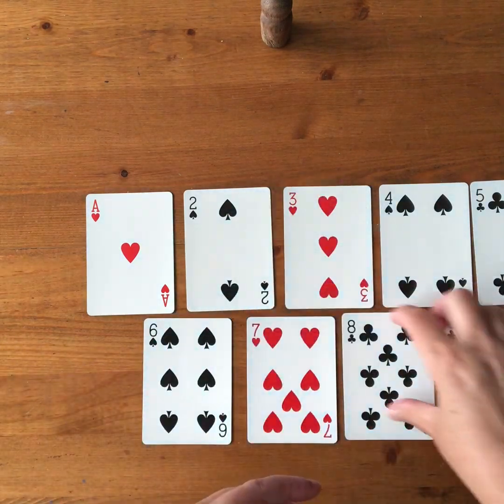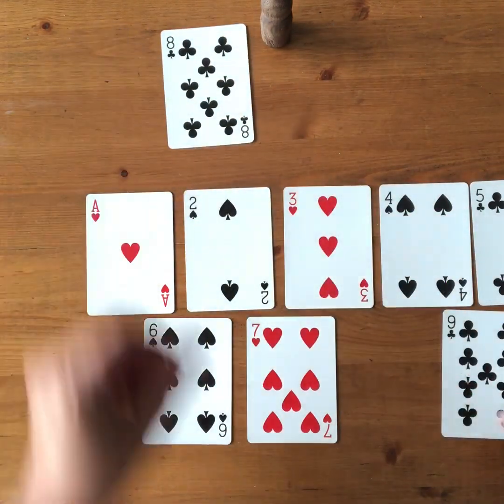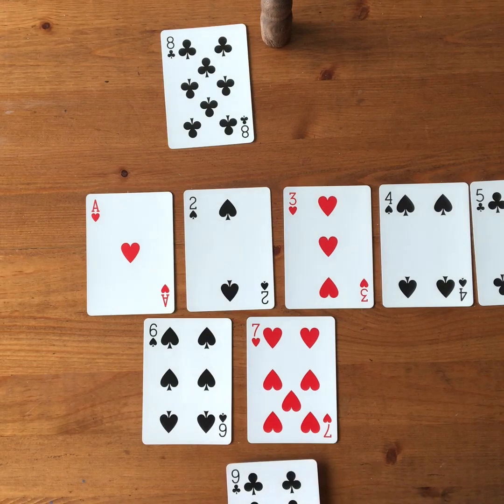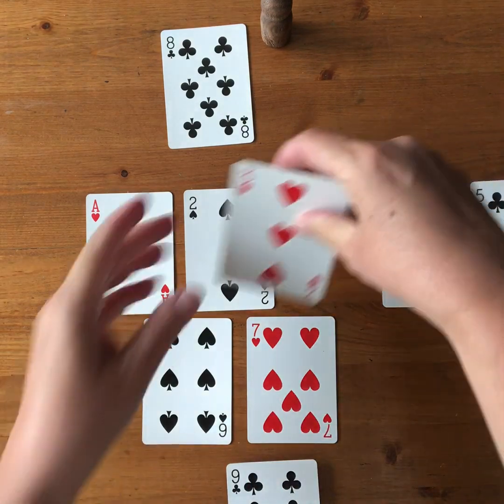So my partner's going to start, and they start by choosing an eight. And I'm going to start by choosing a nine. And then my partner chooses a three.